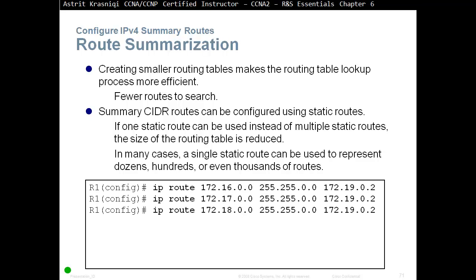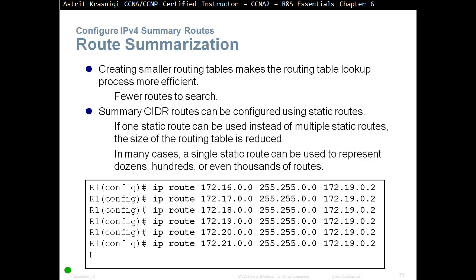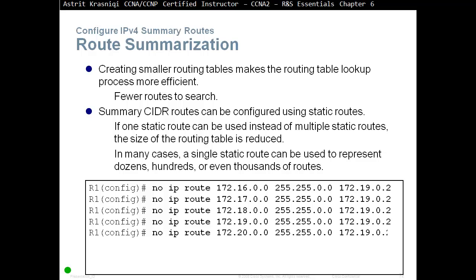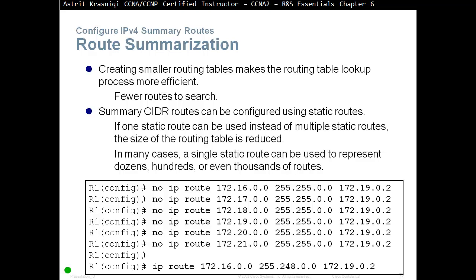For example, here we have the static routes we've created. We have six static routes — IP route 172.16.0.0 with a mask and the next-hop IP address. All of these could be summarized into one summary route only. Instead of six, we get rid of all of them and create just one standard static route, summarizing all six remote destinations into one summary route: IP route 172.16.0.0 255.248.0.0, with exit or next-hop address 172.19.0.2.